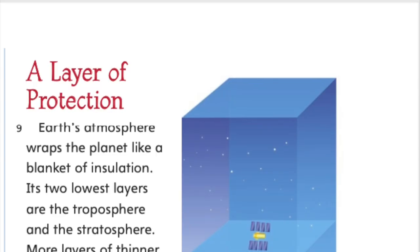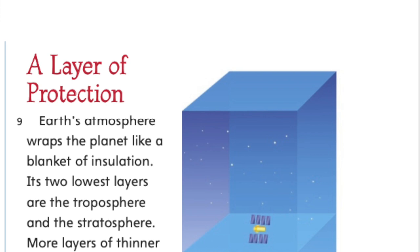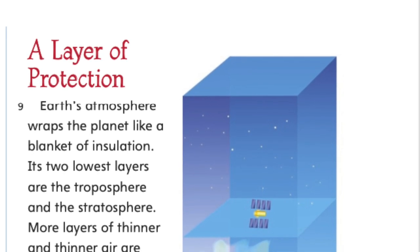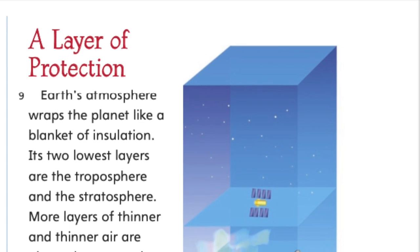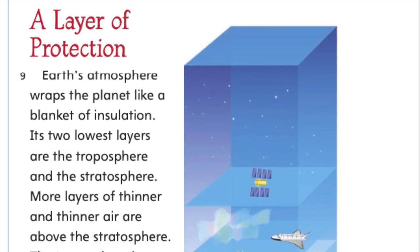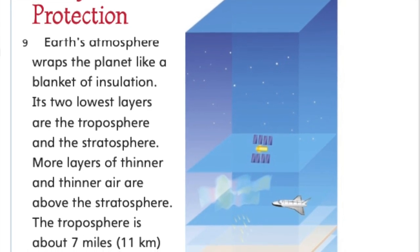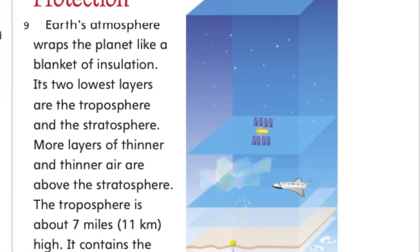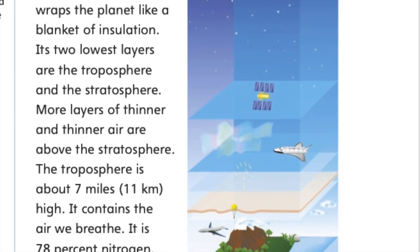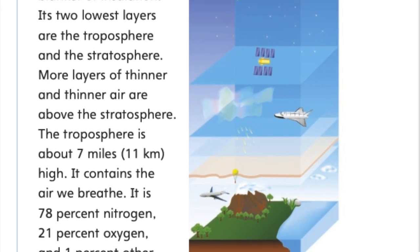A layer of protection. Earth's atmosphere wraps the planet like a blanket of insulation. Its two lowest layers are the troposphere and the stratosphere. More layers of thinner and thinner air are above the stratosphere. The troposphere is about 7 miles high. It contains the air we breathe. It is 78% nitrogen, 21% oxygen, and 1% other gases.